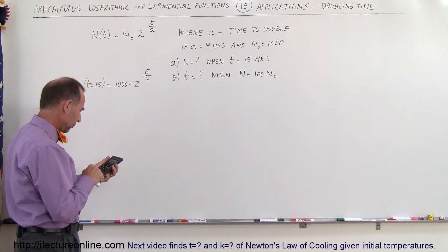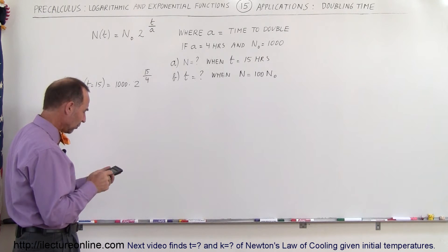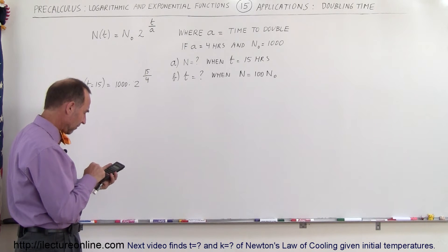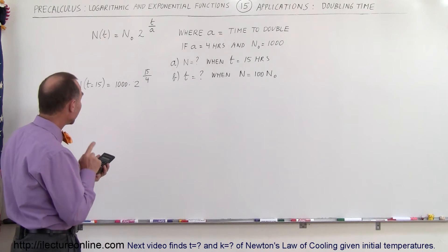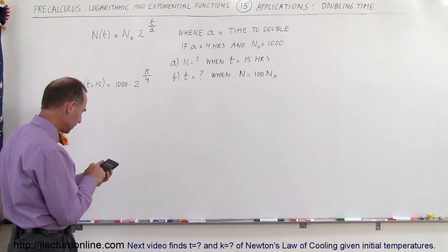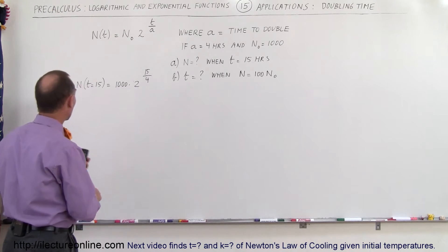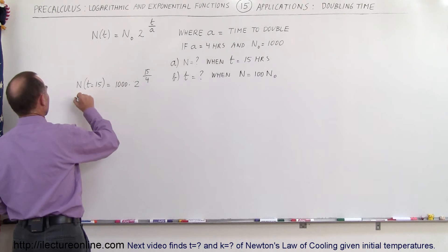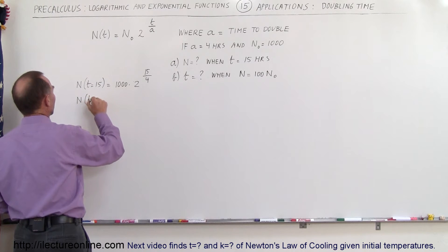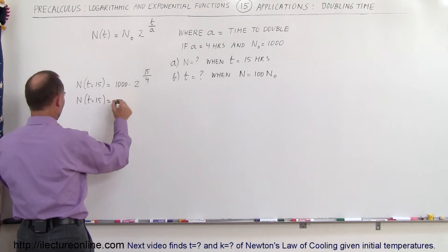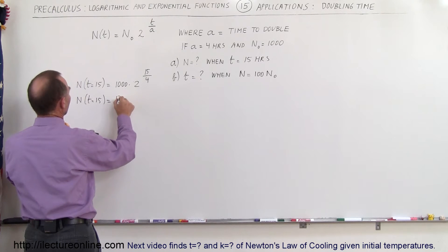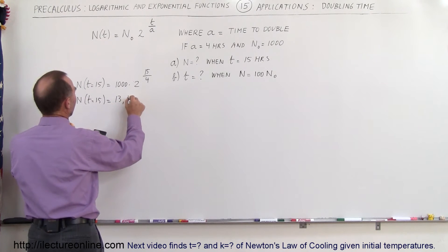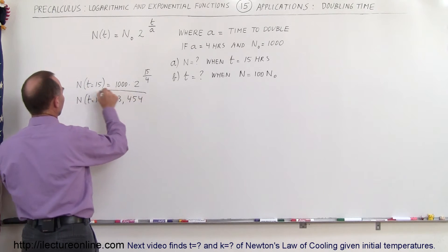So we take 15 divided by 4, which becomes the exponent of 2. So 2 raised to the 3.75 power, and that multiplies times a thousand, giving us the quantity n. When the time has reached 15 hours, n is therefore equal to 13,454. So that's our first answer.